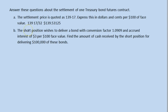In the next part of the question, it says the short position wishes to deliver a bond with conversion factor 1.0909. A Treasury bond futures contract when you are short is the promise to deliver a Treasury bond with a maturity greater than 15 years and a yield of 6%. The trouble is there may not be a Treasury bond that has a yield of exactly 6%, so we allow the short position to deliver any bond with a maturity greater than 15 years and adjust it so it ends up yielding 6% when delivered to the long position. The short can deliver a 7% bond and we fiddle with the price the long position has to pay so it's as if a 6% bond were delivered. That adjustment is made with the conversion factor.